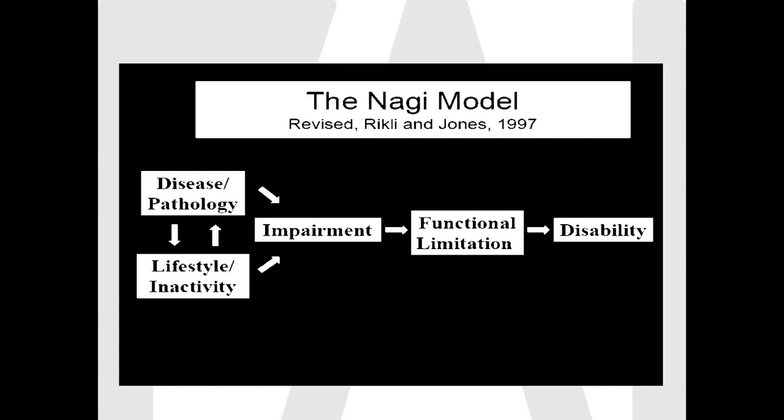As those impairments start to worsen, they're going to start to impact our function — our ability to do tasks in life, whether carrying groceries, climbing stairs, playing tennis or golf. Function is really what we're all about; we want to maintain high levels of function. As function worsens, eventually someone becomes so functionally limited that they cannot fulfill their socially defined roles, and so they are considered disabled. We want to focus on how to maintain the highest level of function possible as we get older.